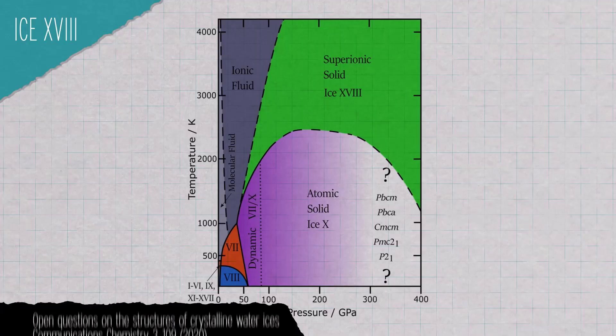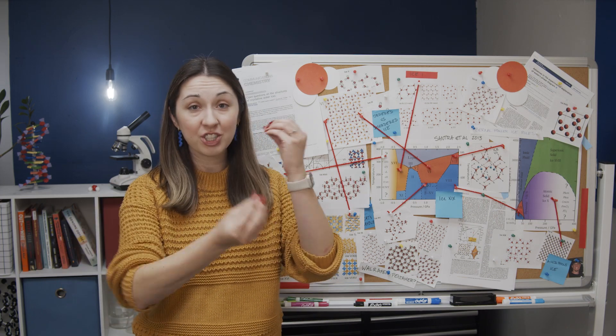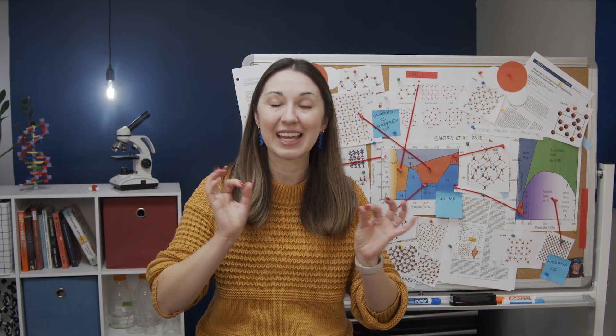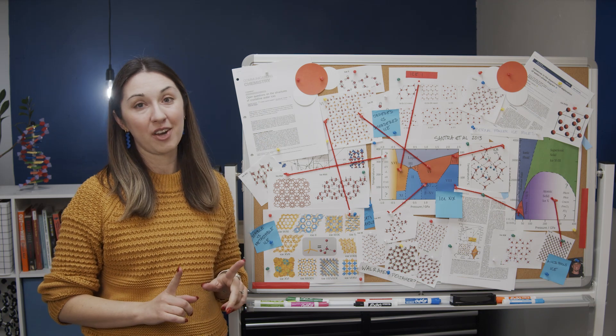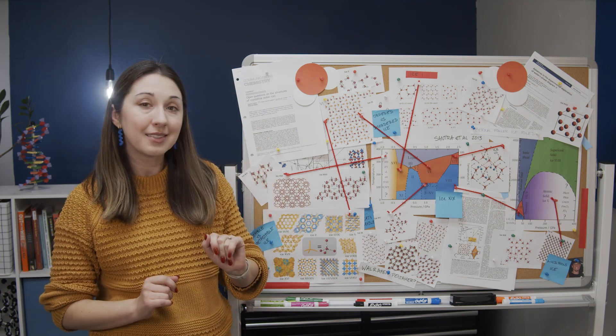Instead, it turns into ice 18, which undergoes super ionicity where the oxygens stay in a lattice structure and the hydrogens just kind of move around them. Now this hydrogen mobility means that ice 18 may be as conductive as some metals, and it is possible that ice 18 is hanging out in the center of really dense and hot planets like Uranus and Neptune. And there's also another super ionic form of ice described in October 2021 that is angling for the title of ice 20.